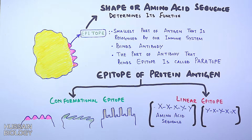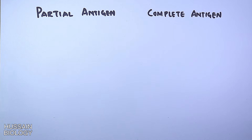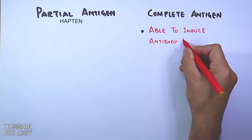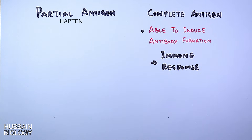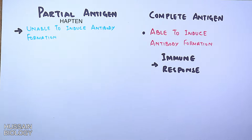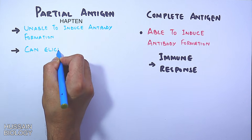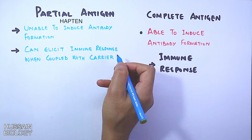Now, getting to the concept of partial antigen and complete antigen. The partial antigen is also termed a hapten. A complete antigen, as its name states, is able to induce antibody formation and evoke an immune response. Whereas a partial antigen or hapten is unable to induce antibody formation on its own and thus cannot evoke an immune response alone, but it can evoke an immune response when coupled with a carrier protein.